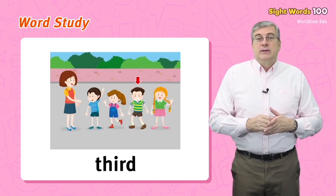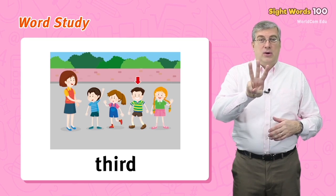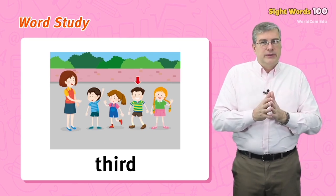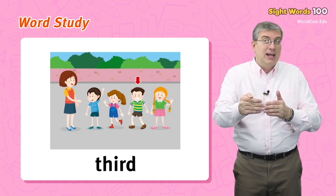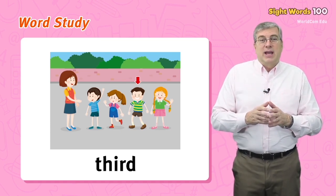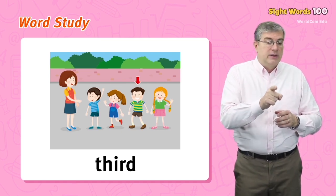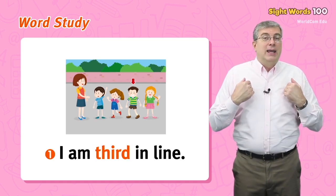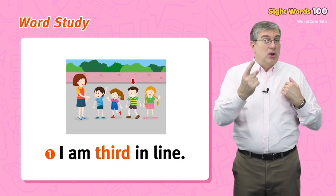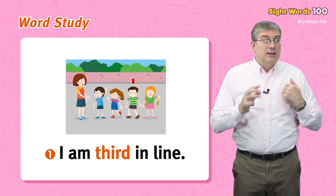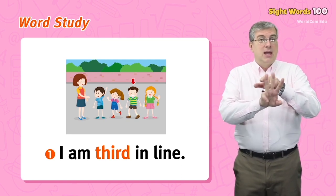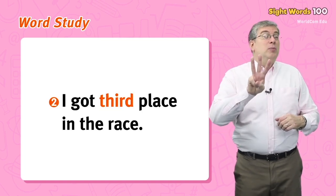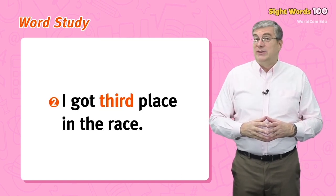Next we have third. When we are comparing things or people in a line, we use words like first, second, third. For example, I am third in line, or I got third place in the race.